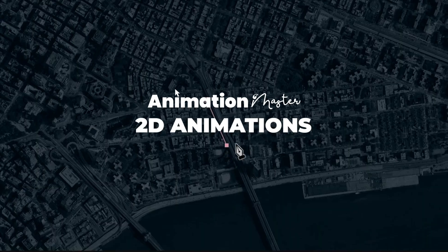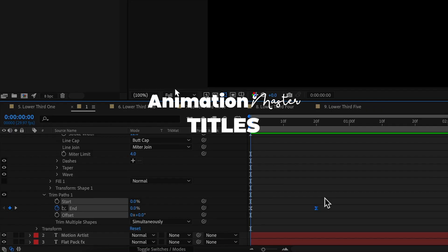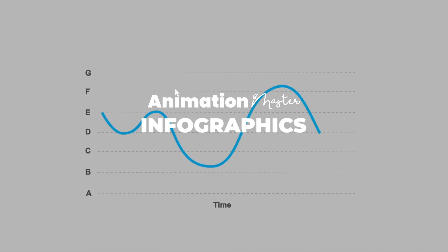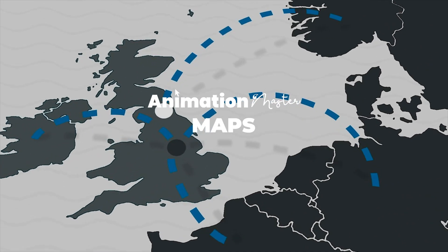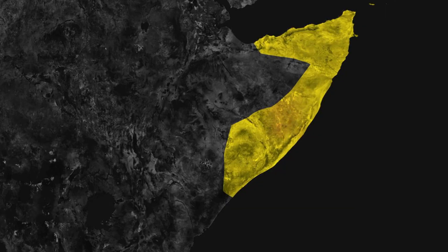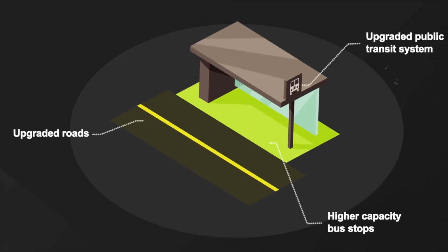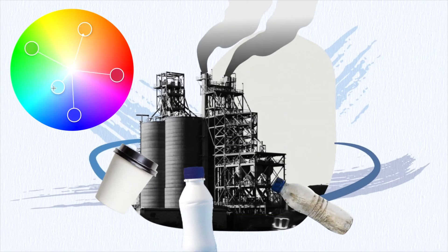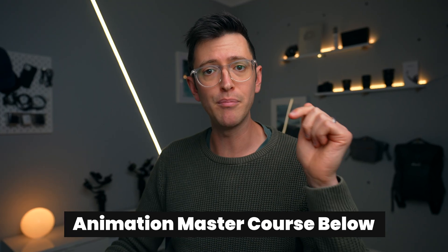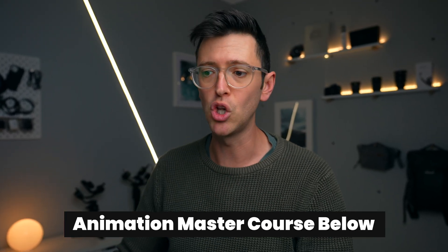If you're interested in learning more about this process and how to make animations look really smooth, mastering the graph editor is a big part of that. I have a course called Animation Master, linked in the description below, that walks you through from start to finish how to create animations inside After Effects — from an absolute beginner's standpoint right through to creating lots of different types of animations.